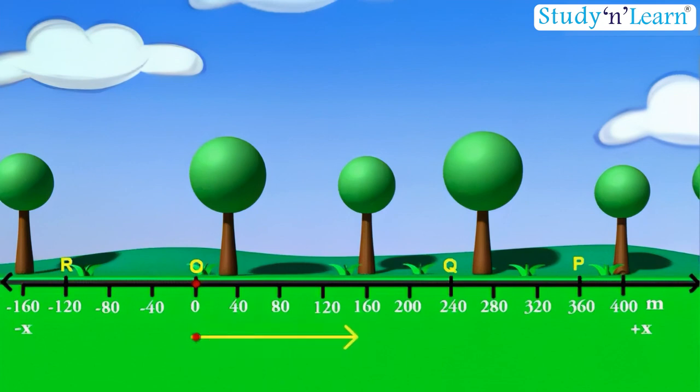Positions to the right of O are taken as positive and to the left of O as negative.